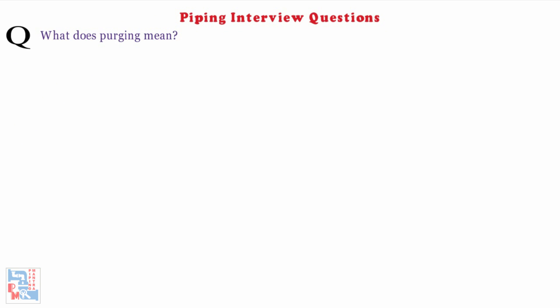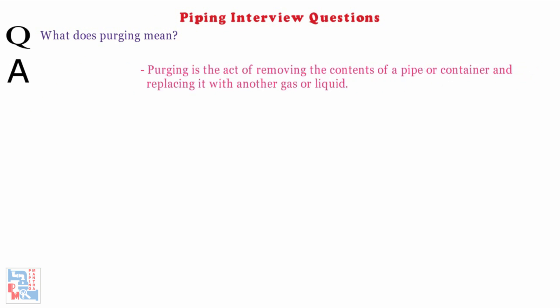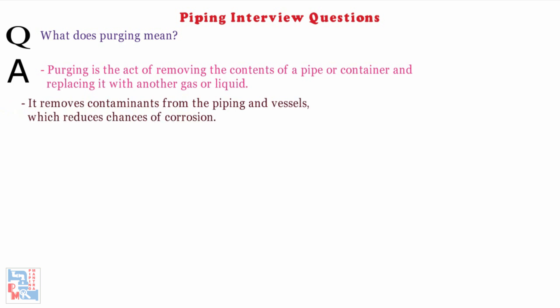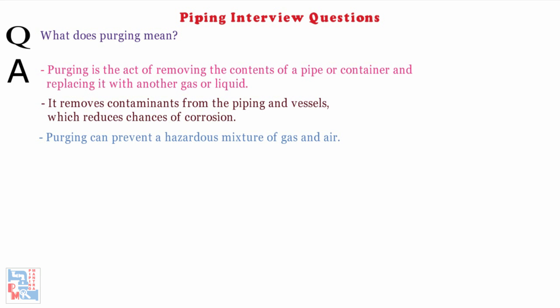What does purging mean? Purging is the act of removing the contents of a pipe or container and replacing it with another gas or liquid. It removes contaminants from the piping and vessels, which reduces the chances of corrosion. Purging can prevent a hazardous mixture of gas and air, and is crucial in pipeline, piping, welding, and industrial processes.